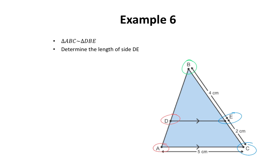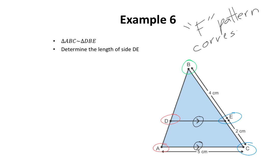You might be asking how do I know that angle D and angle A are equal, or how do I know that angle E and angle C are equal? Well, you can tell by the fact that these are parallel lines. When you have parallel lines, there are patterns that you can observe. Angle D and angle A, and angle E and angle C match the F pattern, which you learned previously. The technical term is corresponding angles, so corresponding angles are equal. You might not be able to see the F because it's upside down and facing the other way.